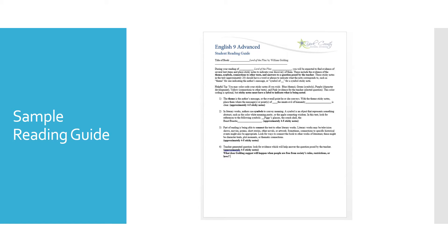The next piece asks students to connect the text to other literary works. Note that literary works are not necessarily just novels — they might be television shows, movies, poems, short stories, or artwork, and sometimes even connections to historical events. For example, if the boys are becoming increasingly savage on the island, maybe I could relate this to a movie like The Purge in which people are savage. You're trying to make meaningful connections with other literary works, showing what this author does with the theme and what another author does with the theme.